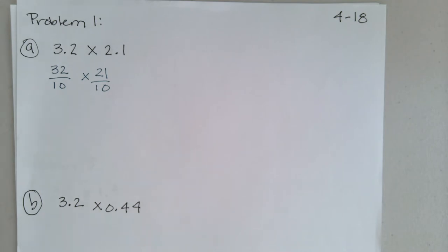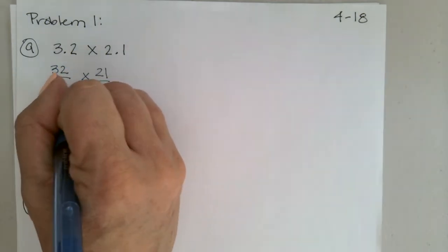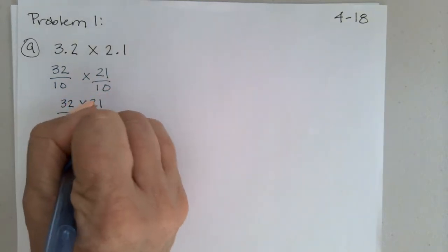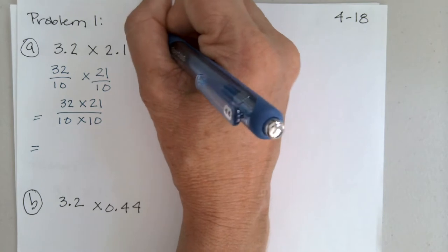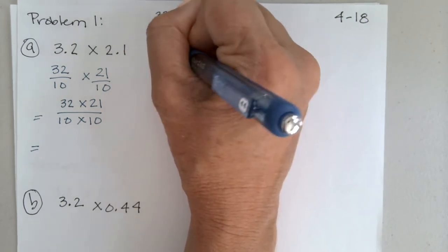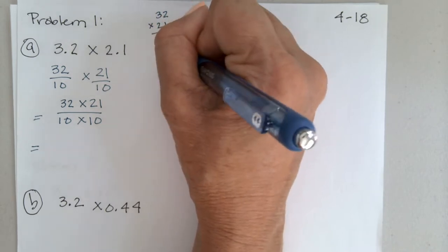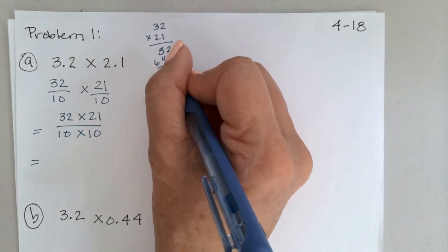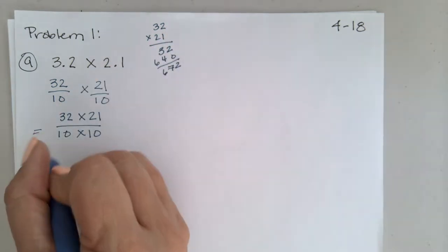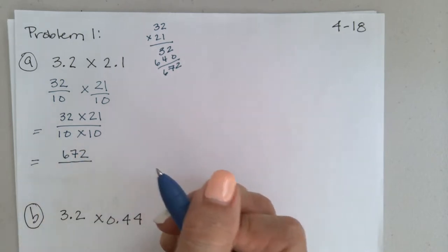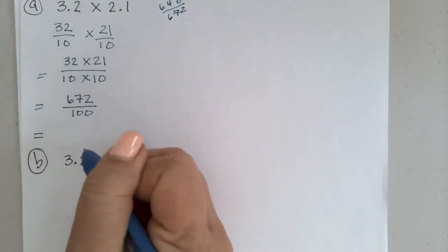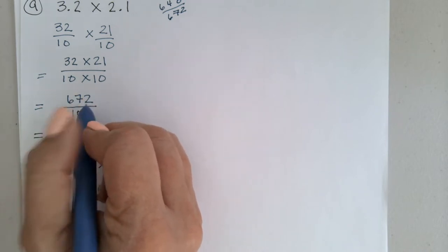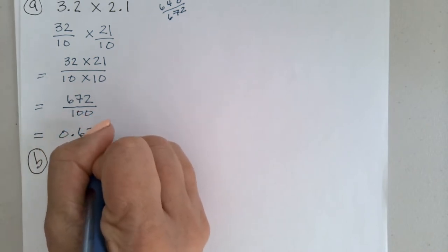Let's use the unit form to multiply 32 tenths and 21 tenths. So let's go 32 times 21 over 10 times 10. We could do the multiplication up here: 32 times 21. Working through that, we end up with 672. So we end up with 672 what? Hundredths. So 672 hundredths — that worked out nicely. We know that the 2 has to be in the hundredths spot.